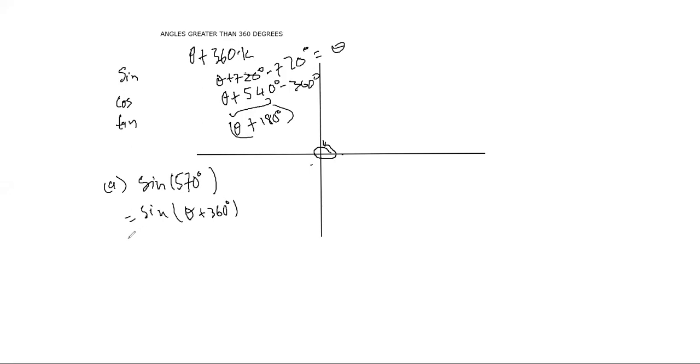It's simple. What is 570 minus 360? 210. So that means this thing here is actually can be written as 210 plus 360 or you can say it's 360 plus 210. That's okay. But you realize what is this? This is a reduction of what?